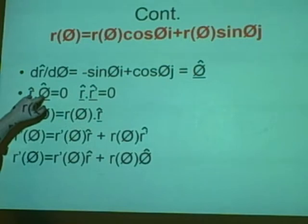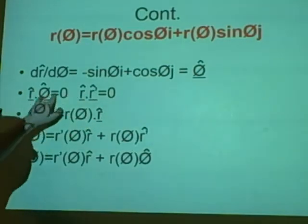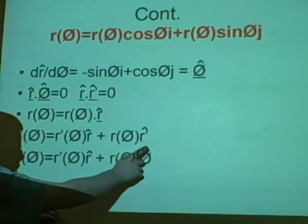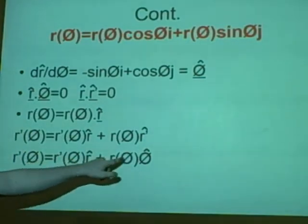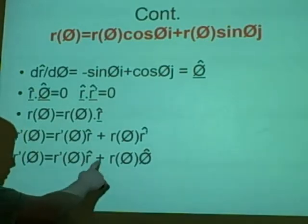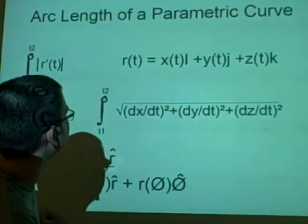We can tell theta hat is the same as r prime hat, so we can change this over and put r of theta theta hat. And this is a standard equation of a parametric curve. Think of these as like i and j, as if they're like that.